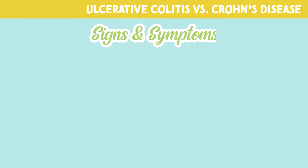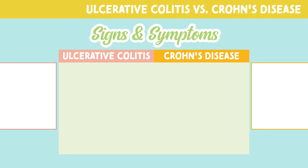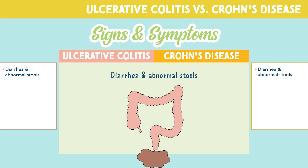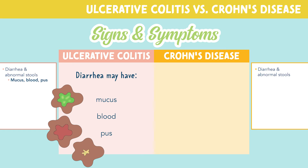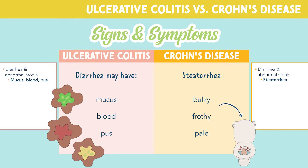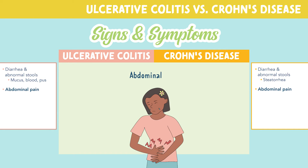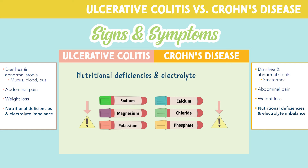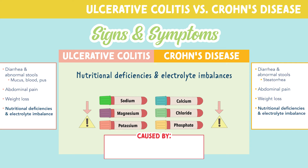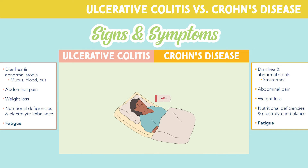Let's look at the classic must-know signs and symptoms for each. Both diseases can produce diarrhea and abnormal stools. In ulcerative colitis, diarrhea may have mucus, blood, or pus. But in Crohn's disease, we see steatorrhea, or bulky, frothy, pale stools. Other symptoms include abdominal pain, weight loss, and nutritional deficiencies and electrolyte imbalances, which can be caused by a lack of vitamins and nutrition and excessive diarrhea. Lastly, these patients may experience fatigue.